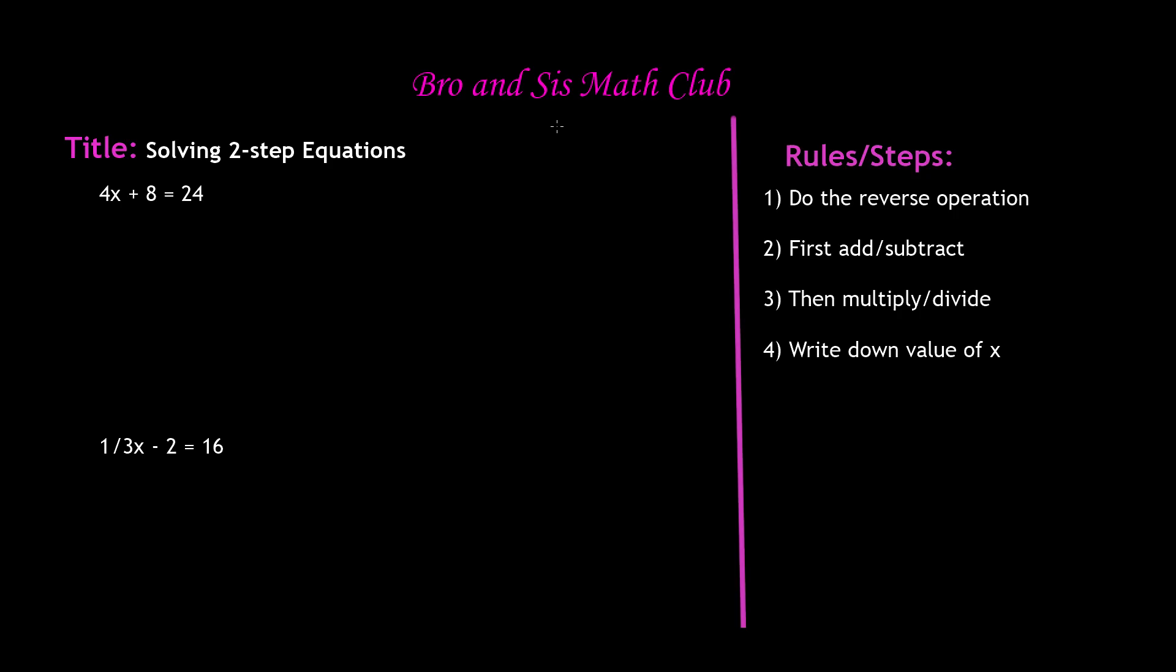So our first example is 4x plus 8 is equal to 24. So first, we have to do the reverse operation, which is the opposite operation, and first we will do addition or subtraction. So here, 4x plus 8, 8 is being added to 4x. So remember, our purpose of equations is to find the value of x. So we have to get x alone. So we will have to eliminate any other value around the x. So first, since 8 is being added, we'll do the reverse operation by subtracting 8 from both sides.